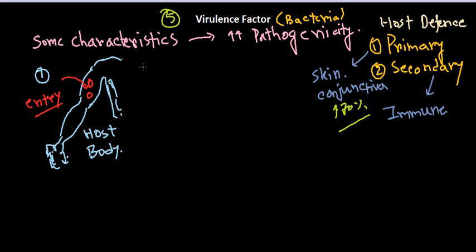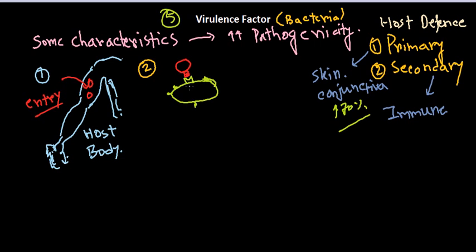The second part of this journey is the adhesion of this microorganism to the host cell. Looking at the cellular level, the host cell has different kinds of receptors on its surface — glycan layers and glycosides coming out of the cell surface. The bacteria interacts with these via ligands, and this receptor-ligand binding is the adhesion step. Adhesion is required before engulfment can occur.